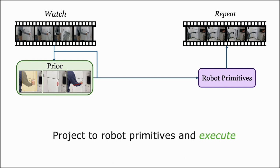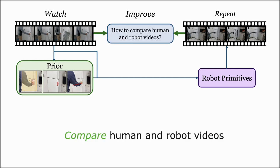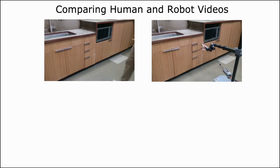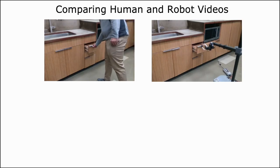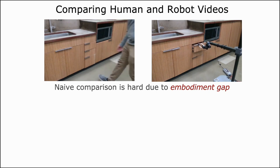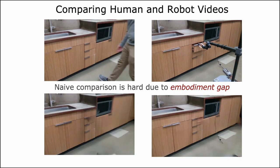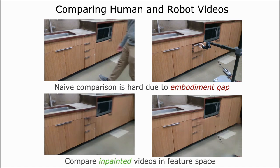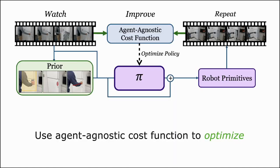But given all of this repetition, the question is how can the robot actually improve? For this, we need to use the human video to guide the improvement. Consider these drawer opening videos — we can't really compare them well in feature or pixel space since there is a large embodiment gap. However, if we mask and in-paint the agents, we can in fact compare these videos. Thus, we build an agent-agnostic cost function using human and robot in-painting methods, and use this to efficiently improve the policy in the real world.